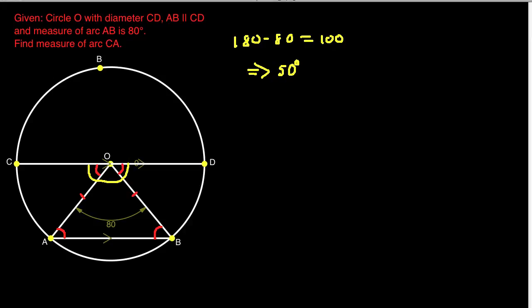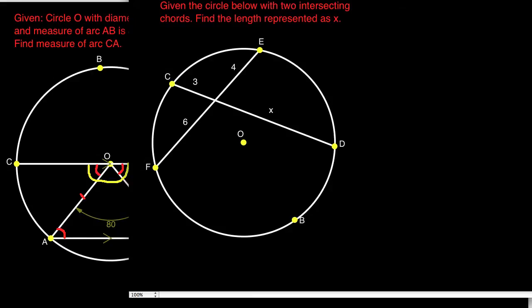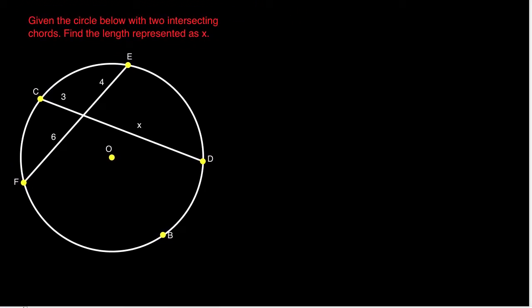Now let's go on to the next problem. It's a little more complicated. We're given a circle with two intersecting chords. We're given the lengths of some of the segments from the intersection point: this length is 4, this length is 3, this length is 6, and we're asked to compute the remaining length.